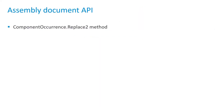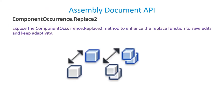Next we move on to Assembly Document APIs. Here only one API is considered for implementation: the Replace function. The Replace function is enhanced to save edits and keep adaptivity after replacing the components, even after replacement.